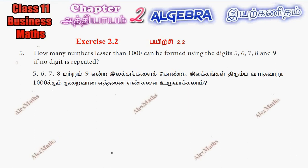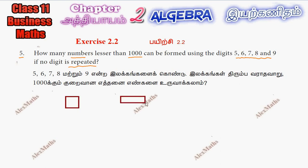Hi students, this is Alex here. Exercise 2.2, question number 5: how many numbers lesser than 1000 can be formed using the digits 5, 6, 7, 8, and 9 if no digit is repeated? Since the number must be less than 1000, it can be a one-digit, two-digit, or three-digit number.